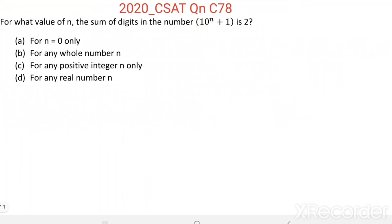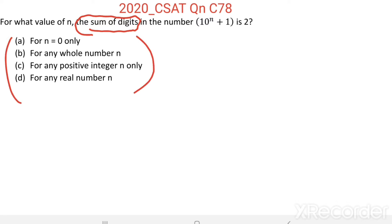Question number 78: For what value of n is the sum of digits in the number 10 to the power n plus 1 equal to 2? The sum of digits is the keyword here. We have four options to consider.